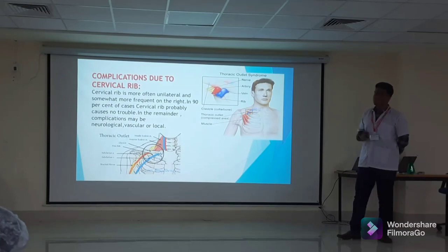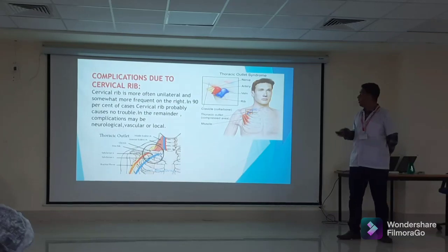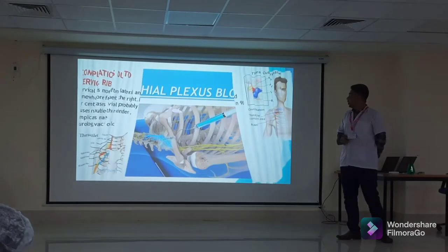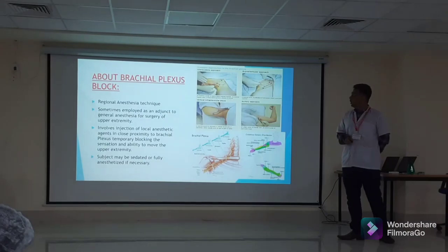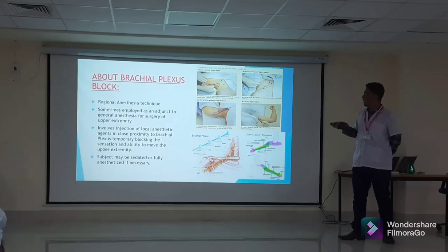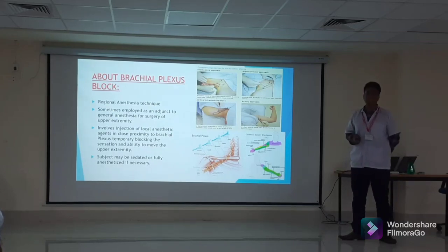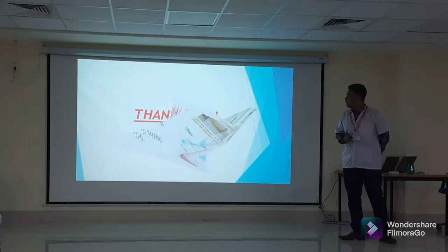Cervical rib is more often unilateral and more frequently on the right side. In 90% of cases it probably causes no trouble; in the remainder, complications can be neurological, vascular, or local. Our final topic is the brachial plexus block, a regional anaesthesia technique sometimes employed as an adjunct to general anaesthesia for surgery of the upper extremity. It involves injection of local anaesthetic agents in proximity to the brachial plexus to temporarily block sensation and movement of the upper extremity.